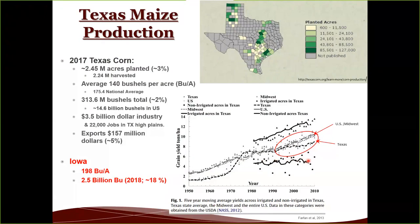One major issue is our non-irrigated land, which represents the majority of Texas maize production and has stayed pretty much stagnant — we haven't seen any real improvement. If we can improve grain yield in our dryland environments while maintaining our increase in irrigated land, we should be able to effectively increase the Texas trend.